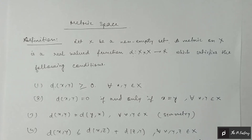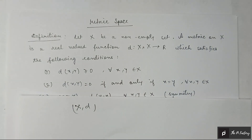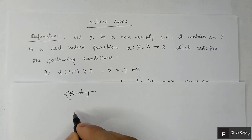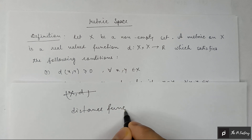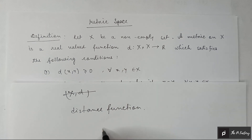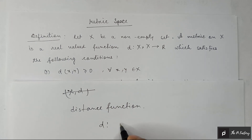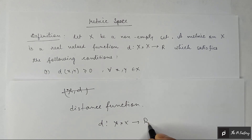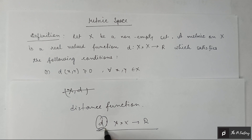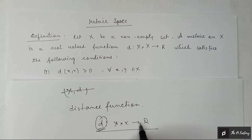Hello everyone, welcome to my channel. Today I'm going to discuss the topic of metric space. So let us begin. First of all, we have to know what a metric space is. A metric space is nothing but a distance function. We define a function d from X cross X to R.